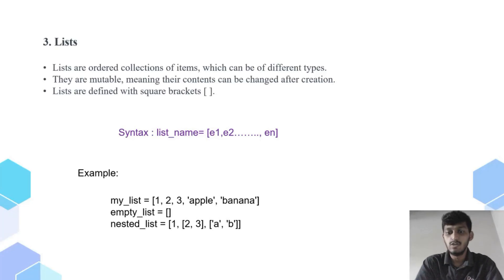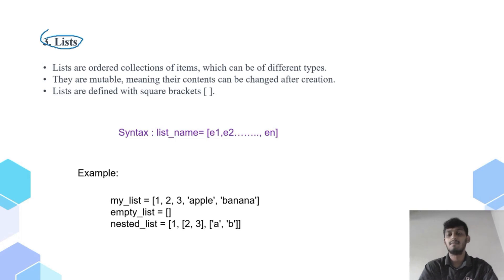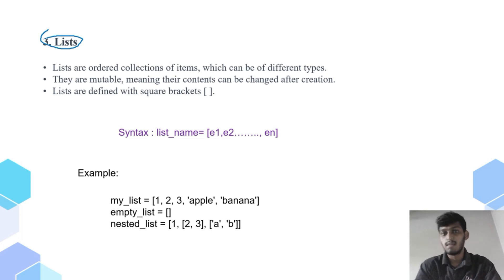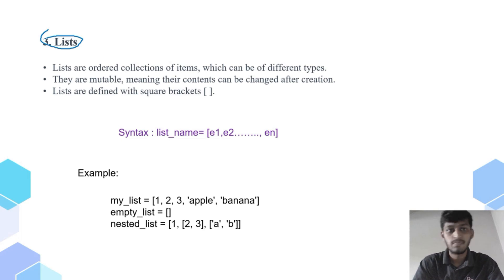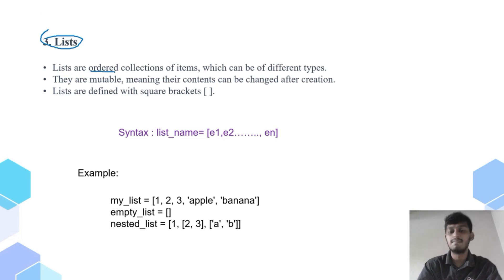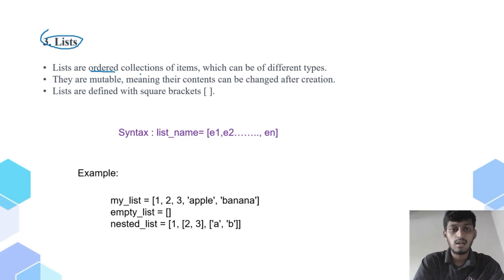Hello friends, welcome to this video. In this video we are going to see lists. In the previous video we saw lists briefly; now we will go into a bit more detail on how to declare them and what their use is. So, list is one of the data types available in Python. Lists are ordered — order means they are indexed — okay, ordered collection of items.